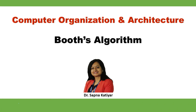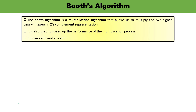Hello everyone, welcome to the video lecture series of Computer Organization and Architecture. Today's topic is Booth's algorithm. This algorithm is used for the multiplication of signed numbers. Booth's algorithm is a very popular and efficient algorithm used to multiply any two signed numbers — binary integers in two's complement representation — and it speeds up the performance of the multiplication process.